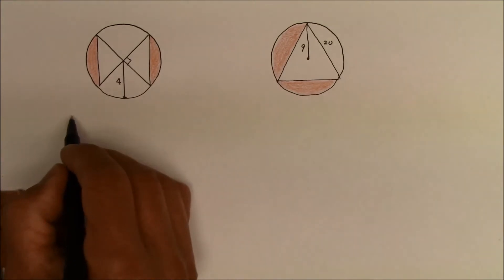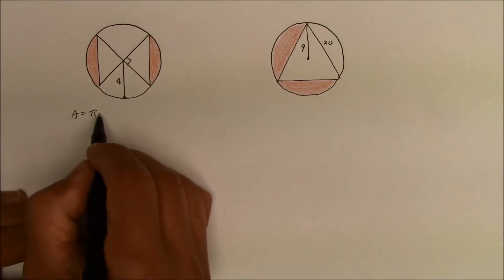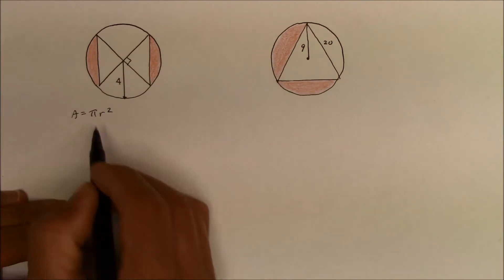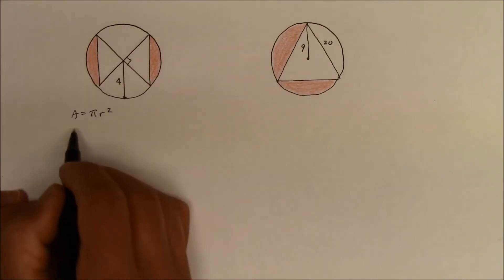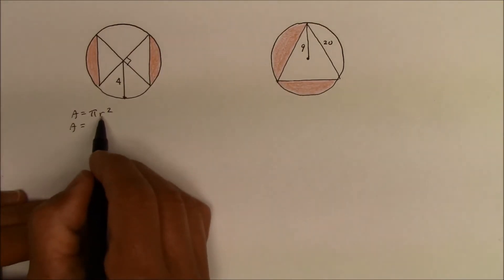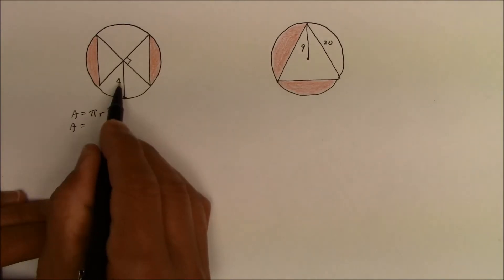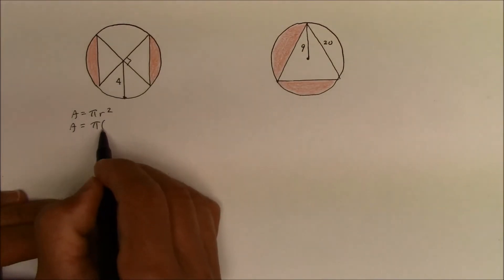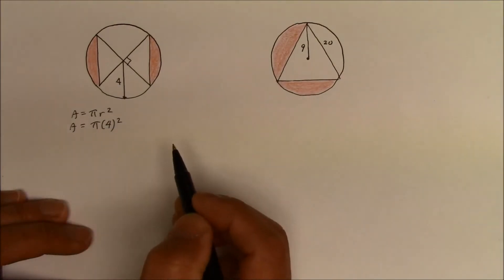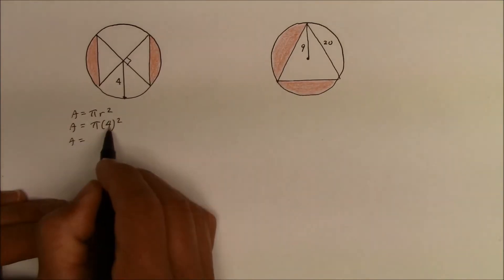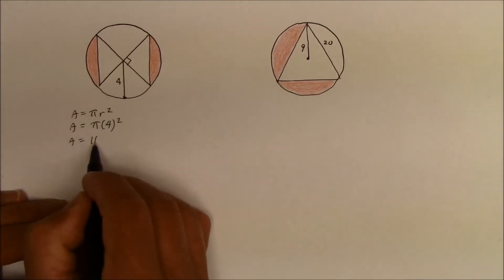You know that the area formula is A equals π r squared. So in this case, all we need is a radius to find the area of a circle and it's given as 4. So that's π times 4 squared. And of course, 4 squared is 16, so that's going to be 16π.